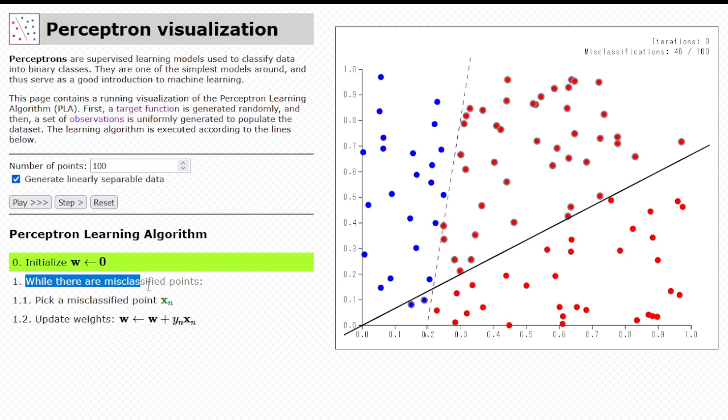And the second, third, and fourth are all related to the while loop, while there are misclassified points. So, basically, while training error is not zero, while training error is not zero,